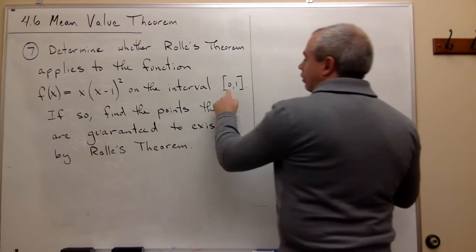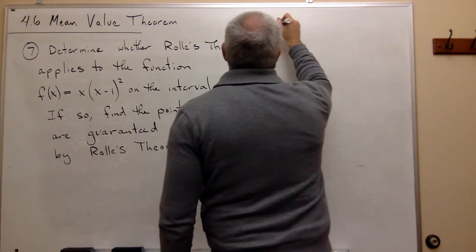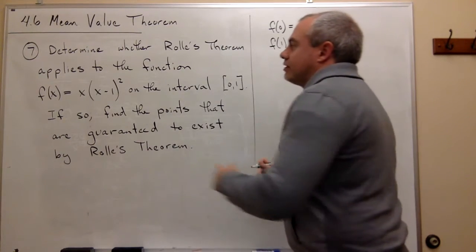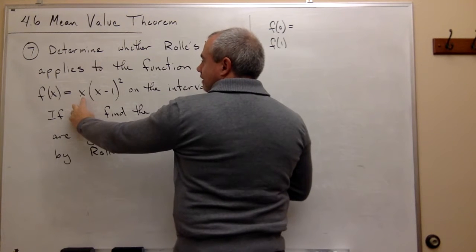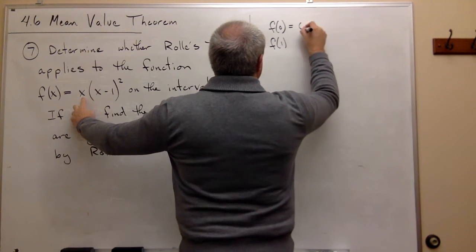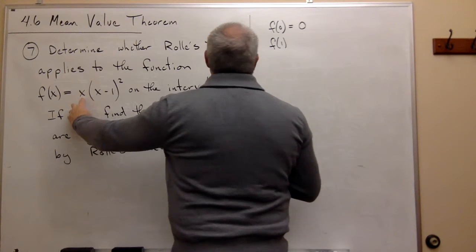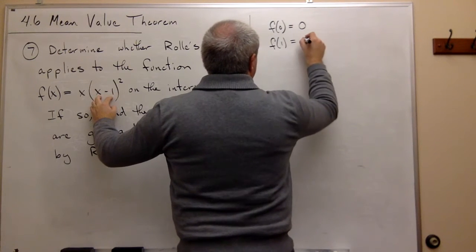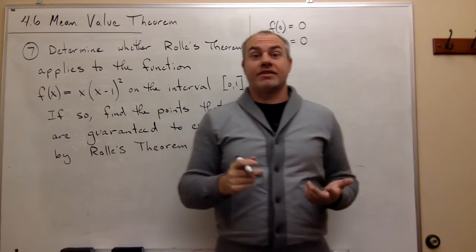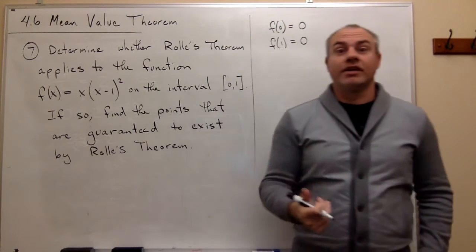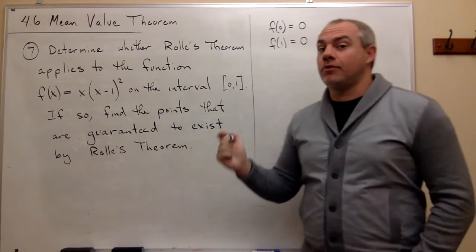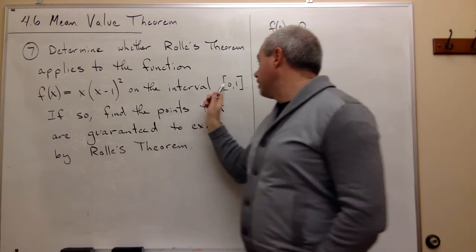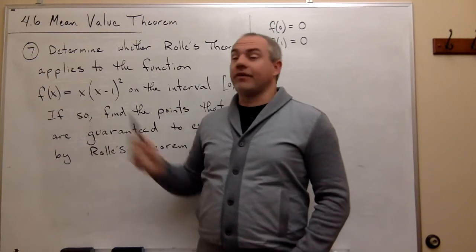In other words, if I look at 0 and 1, the endpoints of this interval, is f(0) the same thing as f(1)? And if I plug in 0 to this function, it's pretty clear since we have this x right here, that f(0) is going to give me 0, because I'm just multiplying by 0. And if I plug in 1, since I have an x minus 1, that's 0, so I'm going to get 0. So the endpoints are, in fact, the same. So it's continuous on the closed interval, it's differentiable on the open interval, and the endpoints are the same. So Rolle's theorem applies, and that means that somewhere between 0 and 1, there is a place where the derivative of that function is 0.